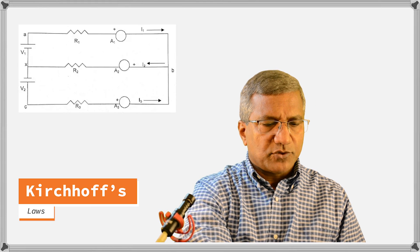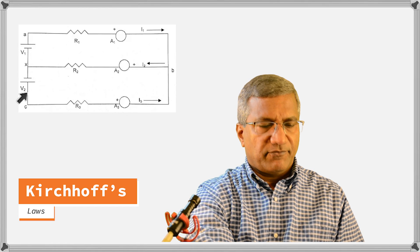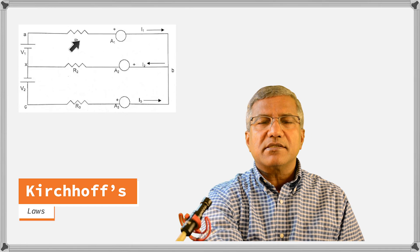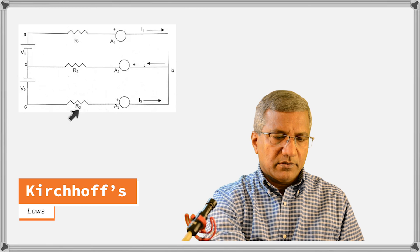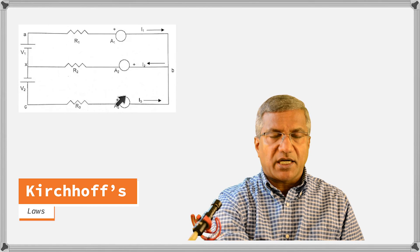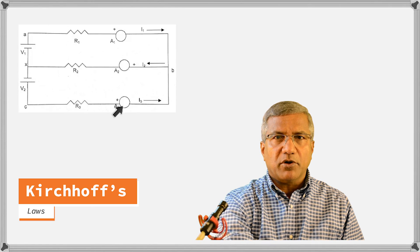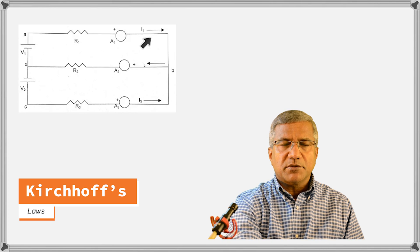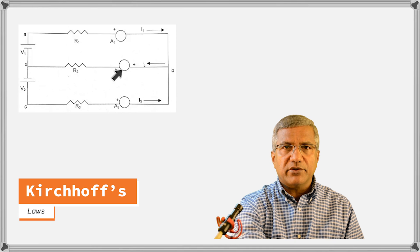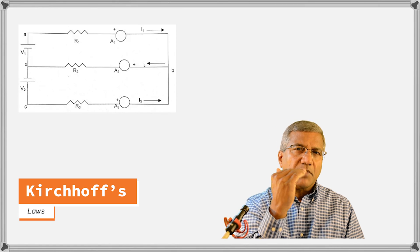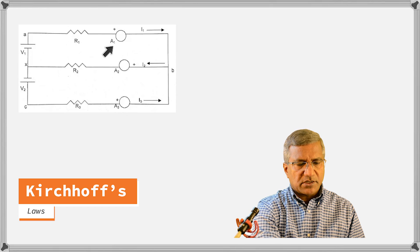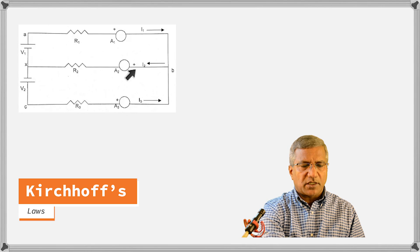To test these rules, we are using the circuit shown in this diagram. You have two voltage sources, V1 and V2, with their negatives connected together at point X, and three resistances R1, R2, and R3. Ammeters are used to measure the currents, and we will use the multimeter at these three points — one at a time — in series with each resistance R1, R2, and R3.